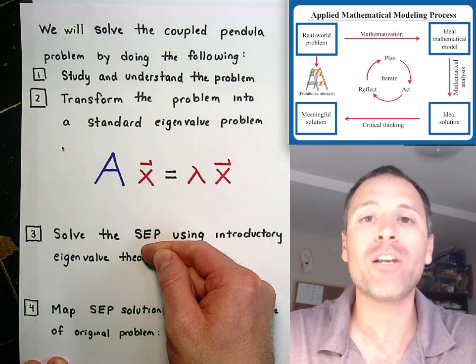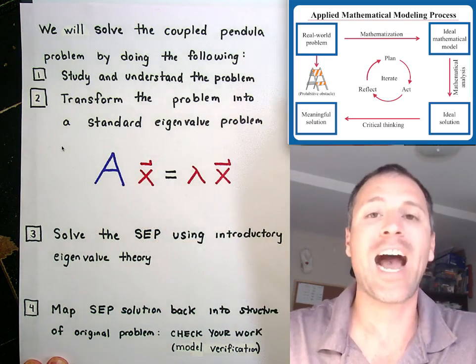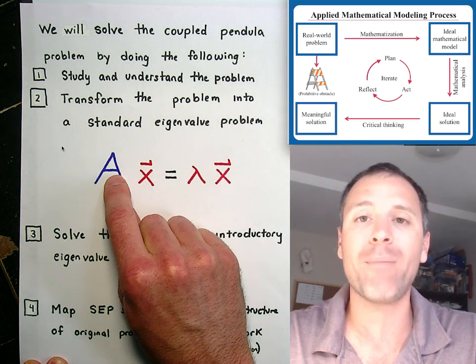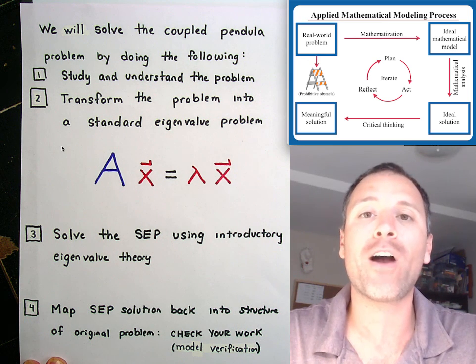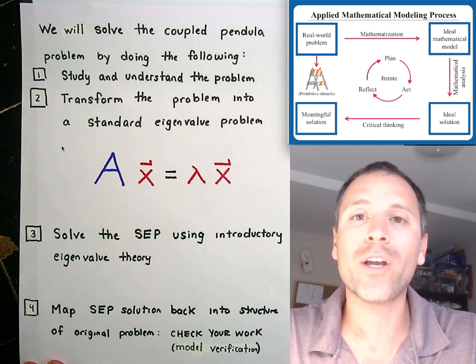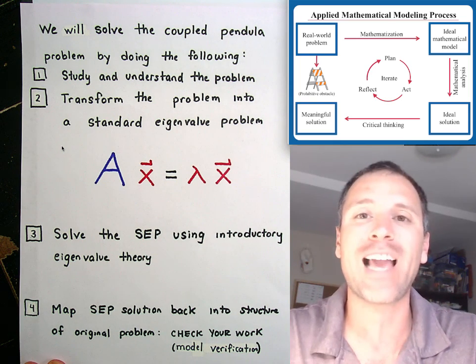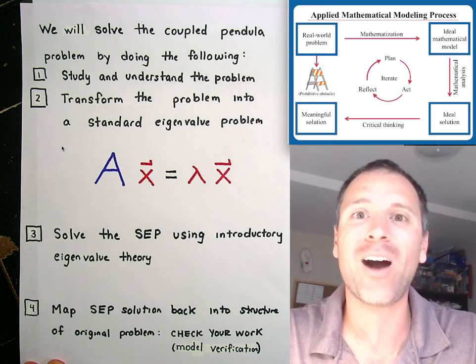We're then going to use theory from linear algebra to get an ideal solution called the eigenvalue-eigenvector pairs of that matrix. And then we're going to map back and verify our model. In the next video, we're going to start our mathematization process to see how we form this matrix and set up our eigenvalue problem. I'll see you there.